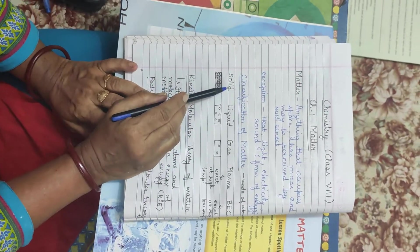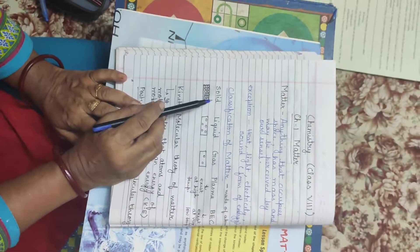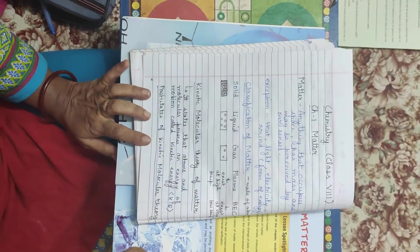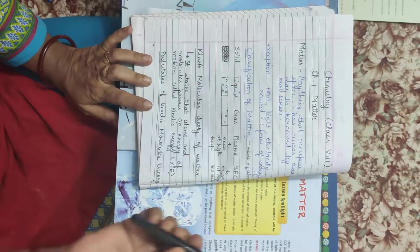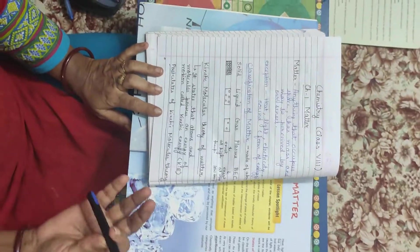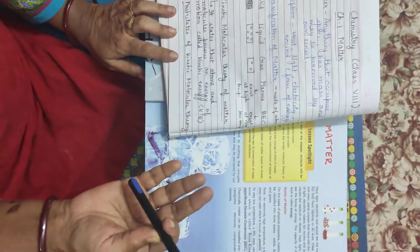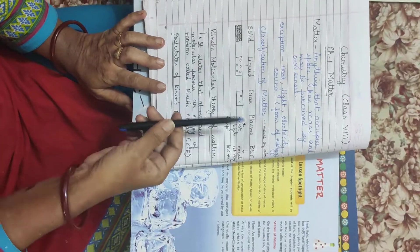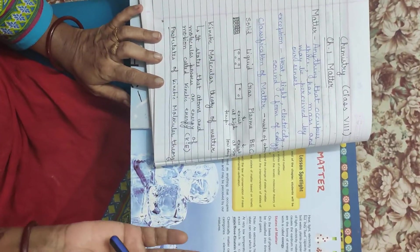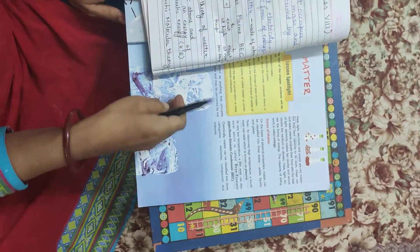It exists at very low temperature. Plasma exists at high temperature and BEC at very low temperature. Now, I hope you know the examples of solids like pen, pencil, notebook, liquid water, alcohol, kerosene oil, gases, carbon dioxide, oxygen, etc. Now, turn your page.